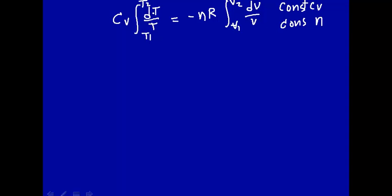the integral of 1 over T will be natural log of T evaluated between these two integration limits. So cV, natural log of T2 final minus T1 initial